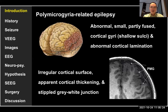Polymicrogyria is an abnormal, small, partly fused cortical gyri, and it contains abnormal cortical lamination. It's a type of cortical malformation, about 20% of malformations in the general population. On MRI, we can see the irregular cortical surface, apparent cortical thickening, and steep gray-white matter junctions.